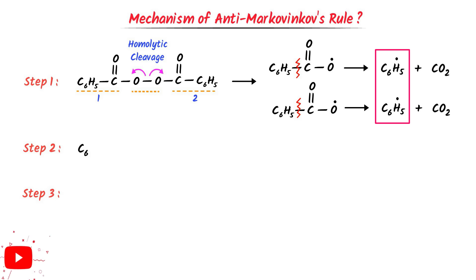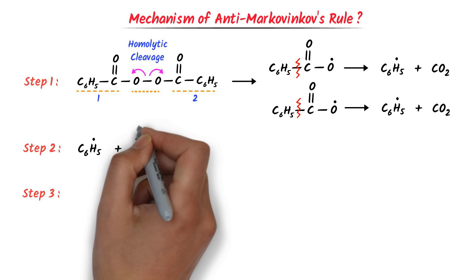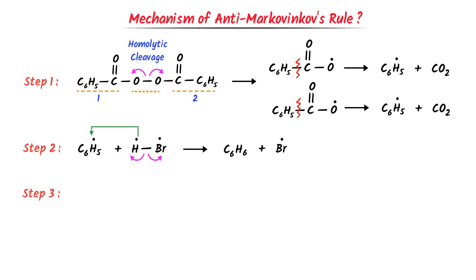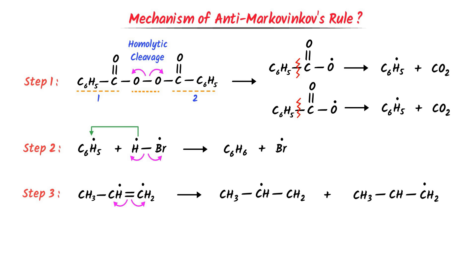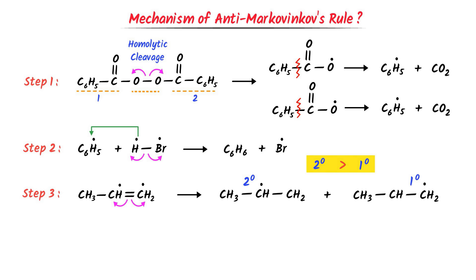In the second step, I take the phenyl free radical and add hydrogen bromide to it. The bond of hydrogen bromide also breaks by homolytic cleavage. The phenyl radical gains the free radical of hydrogen, giving us benzene plus a free radical of bromine. In the third step, I take propene and homolytic cleavage of the double bond occurs. We get two free radicals: a 2-degree free radical, because its carbon is attached to two other carbon atoms, and a 1-degree free radical, because its carbon is attached to only one carbon atom. The 2-degree free radical is more stable, so the bromine free radical attacks it.